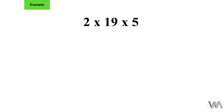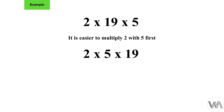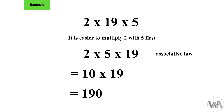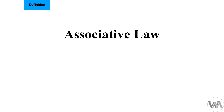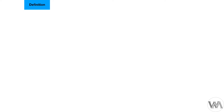Applying this to a real-life calculation: two times 19 times five. This looks tricky — two times 19 gives 38, and then 38 times five gets more difficult. But if we swap numbers around to make the initial calculation easier, it's better to multiply two with five first. So two times five times 19: two times five equals 10, and 10 times 19 is easy using the ten times table — that's 190. Again, the associative law only works for addition and multiplication, not for subtraction or division.